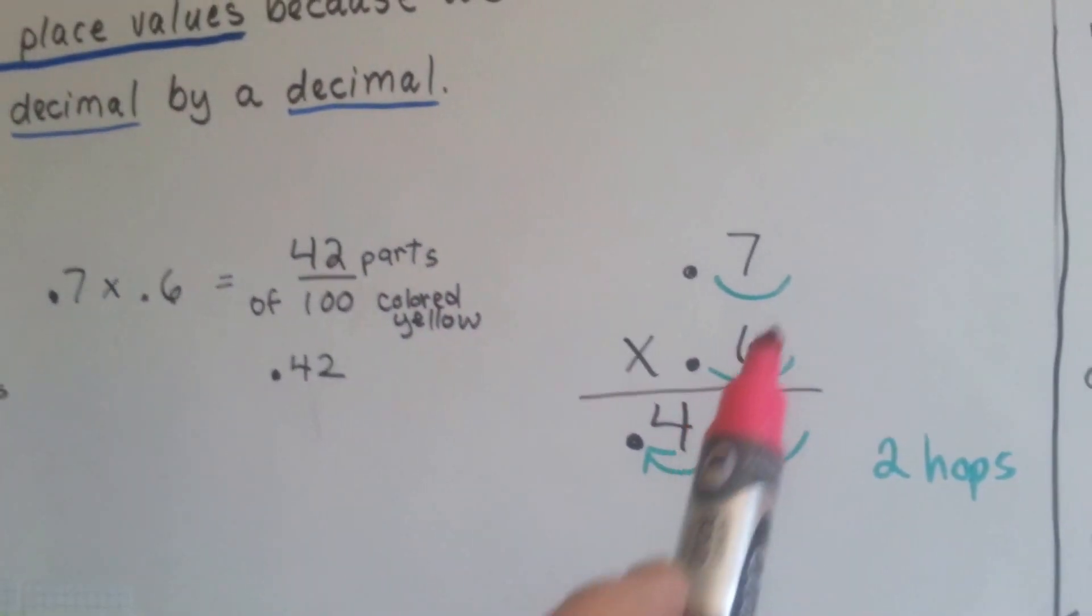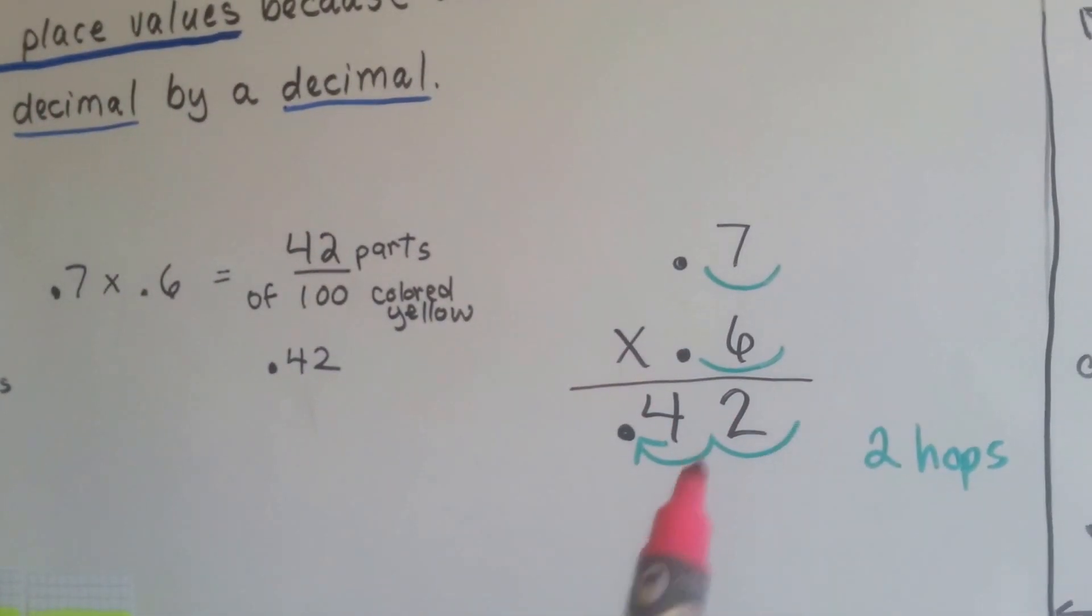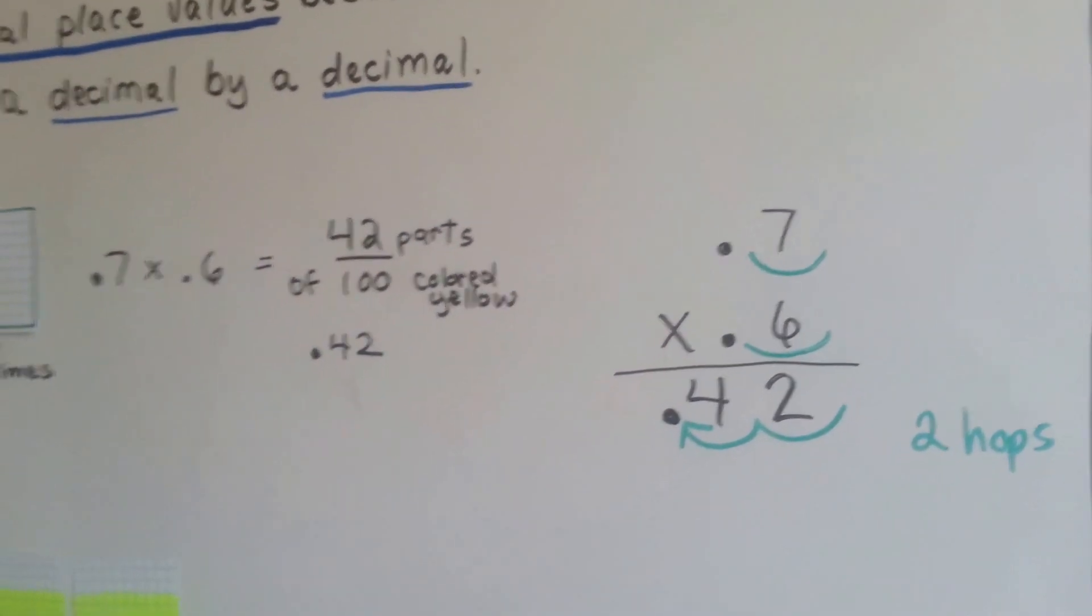We count the hops. One, two. There's two hops. One, two. Forty-two hundredths.